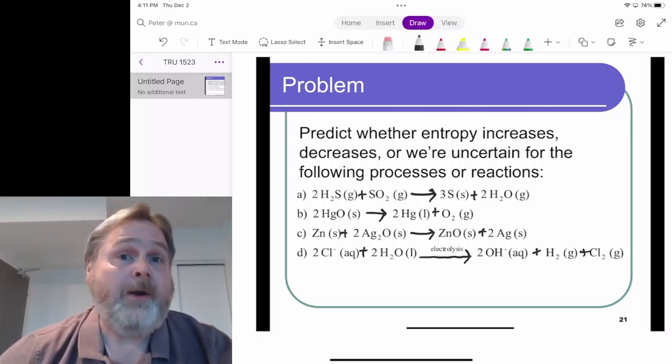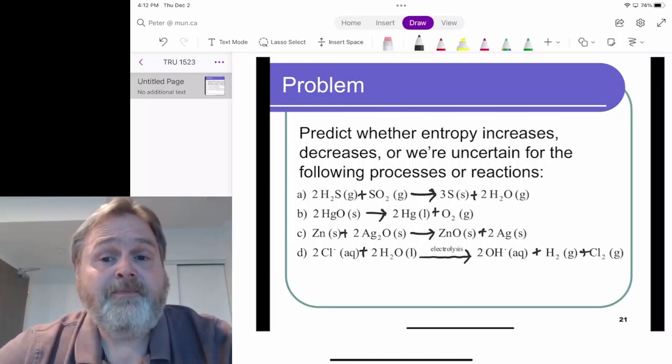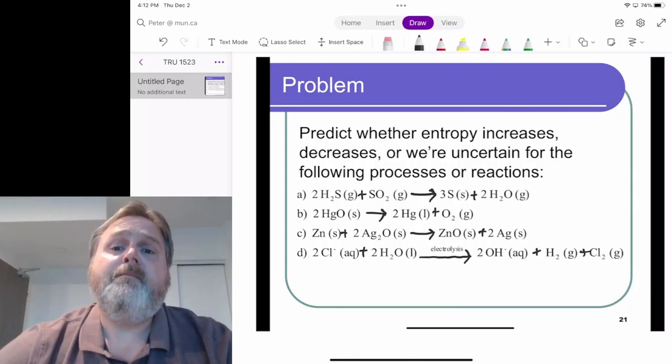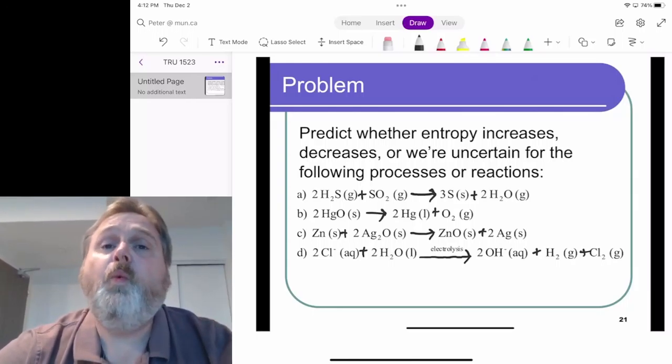We see 2H2S, we see 1SO2, that's three stoichiometric coefficients of gas on the reactant side. On the product side, we've got that clump of solid, pretty low entropy in that case, because there's no freedom of motion for those sulfur atoms, other than the vibration that they do inside the solid. And we also have two water gas.